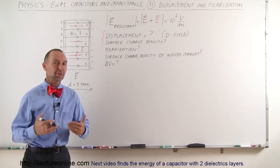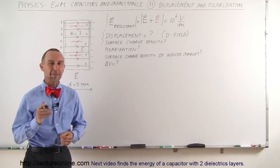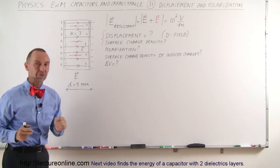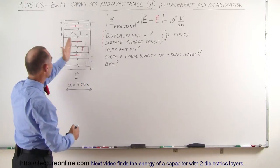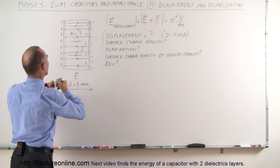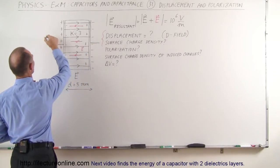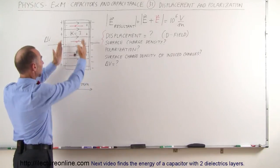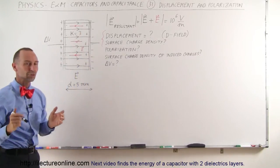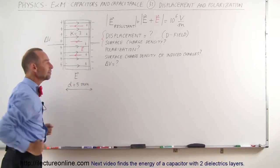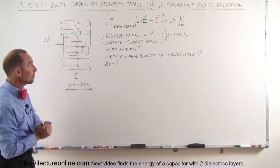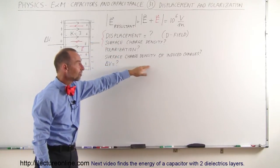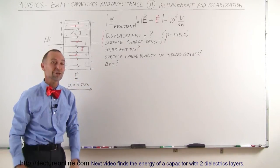Welcome to ElectronLine. We're going to look at another aspect of capacitors called displacement and polarization, which we deal with when putting a dielectric inside a capacitor. We have a capacitor with a potential difference delta V across it. The dielectric constant is 3, the plates are 5 millimeters apart. The questions are: what is the displacement, surface charge density, polarization, surface charge density of induced charges, and the potential difference across the plates?